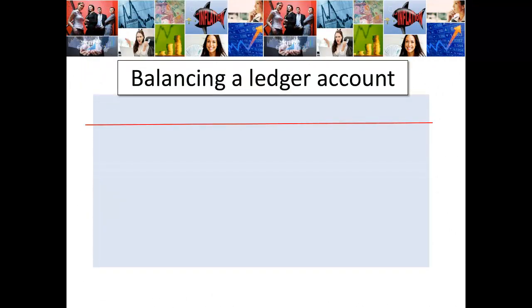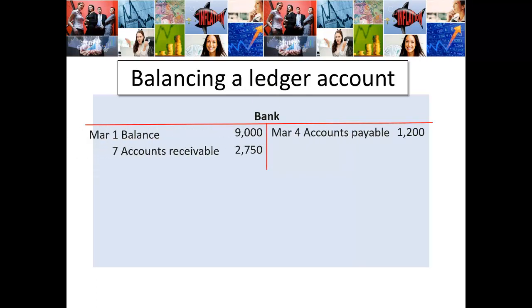Balancing a ledger account. Here goes — the ledger account named bank. It starts with the March 1st balance, and across the course of the week there are three separate transactions: one involving accounts receivable, the other accounts payable, and shop fittings.